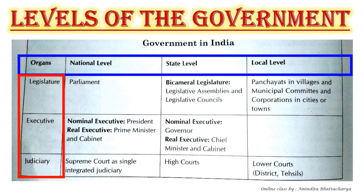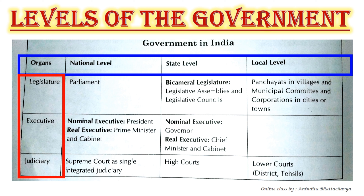At the state level, the legislature is called the Bicameral Legislature (bicameral means two houses) — with two houses such as the Legislative Assembly (Vidhan Sabha) and the Legislative Council (Vidhan Parishad). At the local level, the legislature is called Panchayat in villages, and Municipal Committees and Corporations in cities and towns.